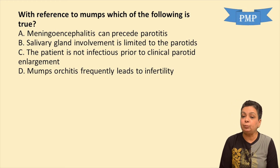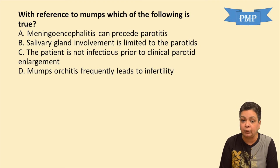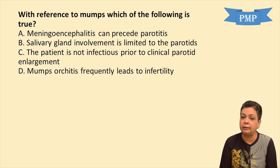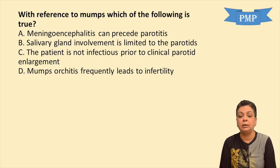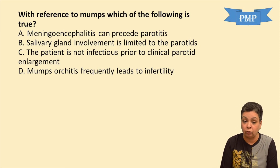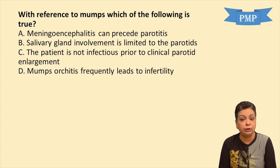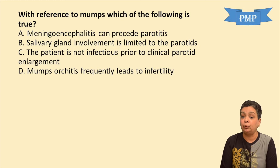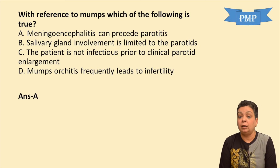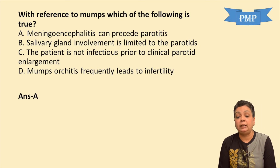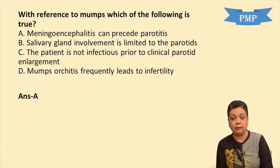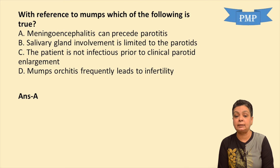Question: With reference to mumps, which is true? Meningoencephalitis can precede parotitis — that is absolutely correct, it can very well precede parotitis. Salivary gland involvement is limited to the parotids — not so. The patient is infectious in the prodromal stage. Mumps orchitis frequently leads to infertility — wrong, it rarely leads to sterility. The answer is A.